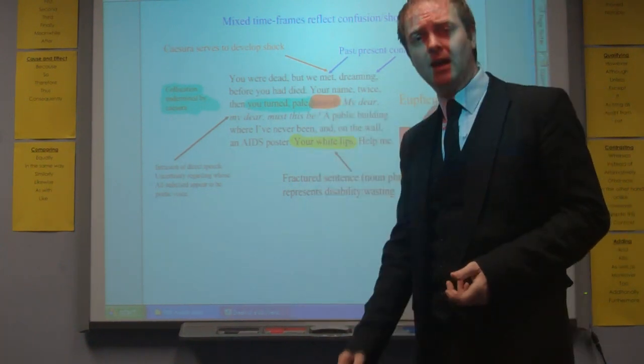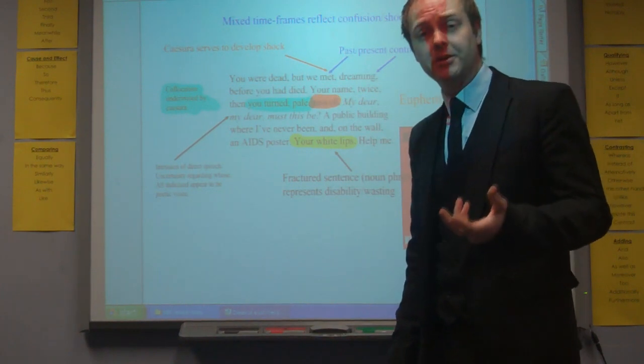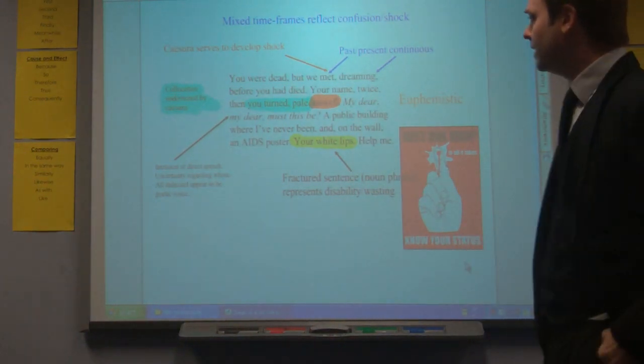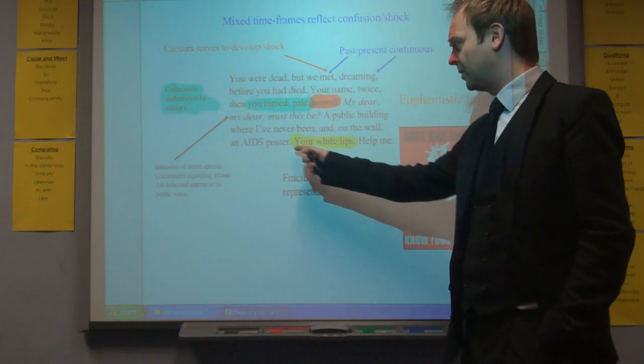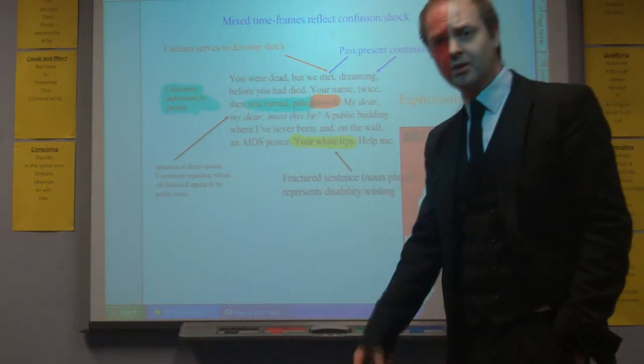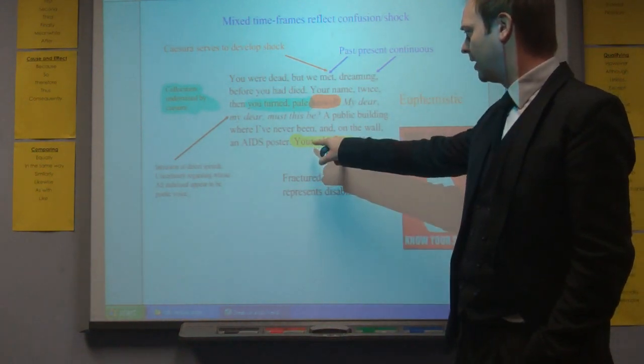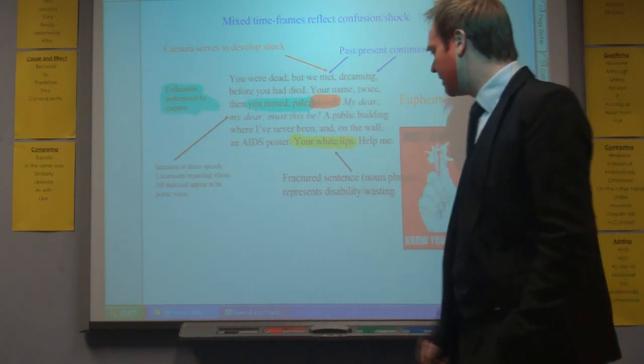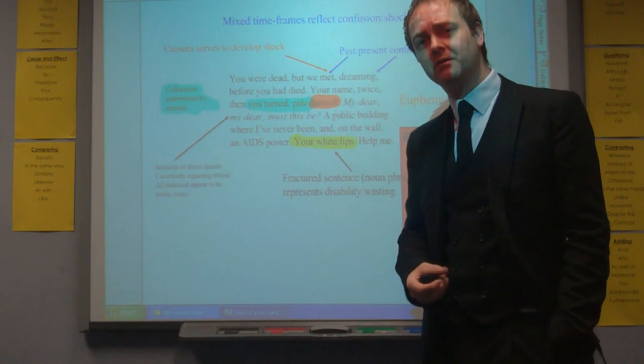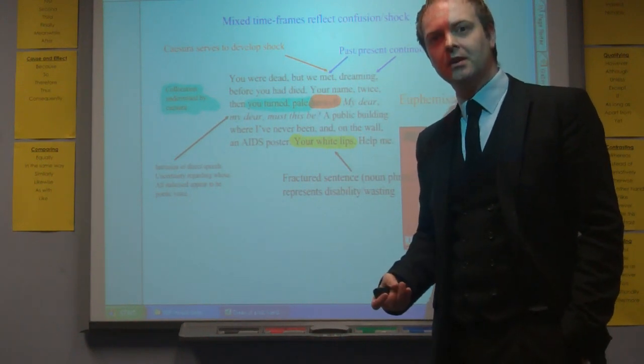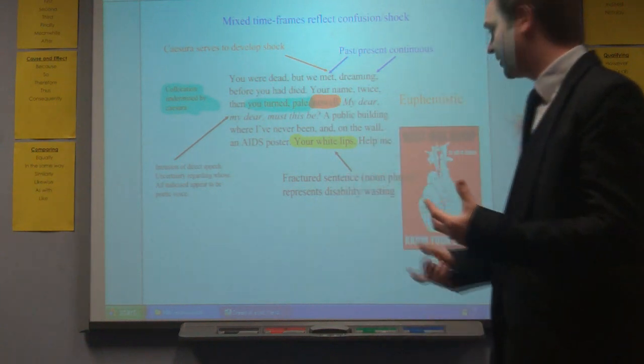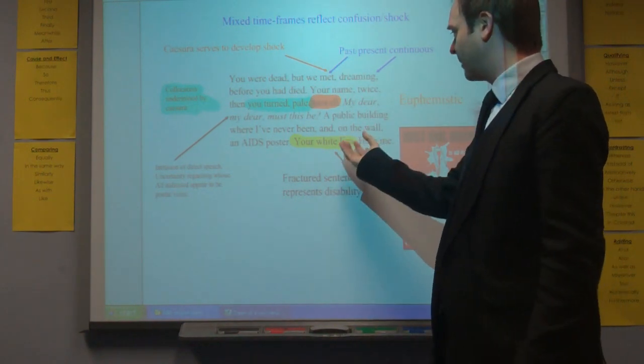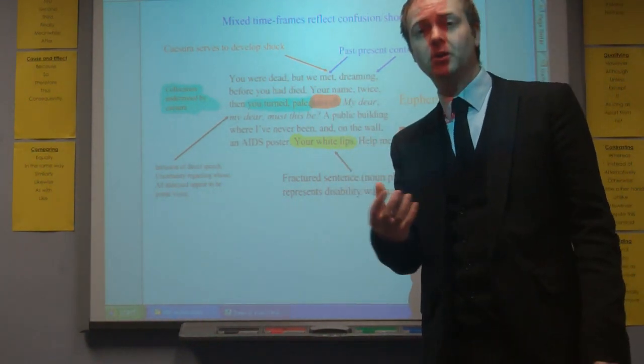Ending with unwell. Unwell, again, seeming very euphemistic given the situation of the person dying or now being dead. A public building where I've never been and on the wall an AIDS poster is our first clue that the person is dead because they contracted AIDS. And then this line's interesting in terms of your white lips. It's a fractured sentence. All we've got there is the noun phrase. We could argue perhaps that it represents the debilitating aspects of the disease. That the fractured sentence, the way it's broken down, could reflect the way in which the person has wasted away themselves. They're almost just left as represented by the lips themselves. Lips that are bloodless. White lips.